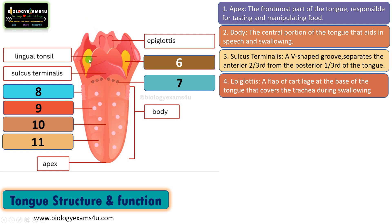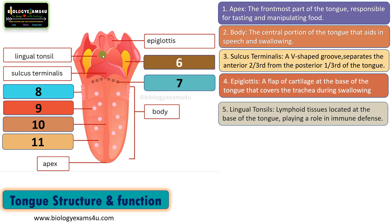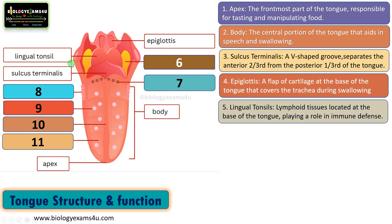The next structure is the lingual tonsil. It is a lymphoid tissue that is located at the base of the tongue, playing a role in immune defense.